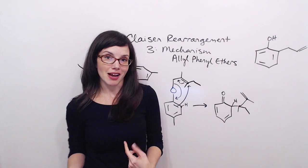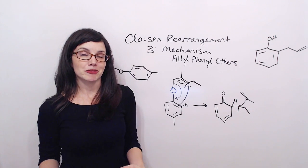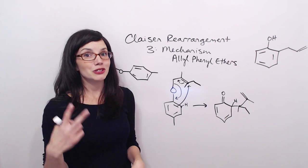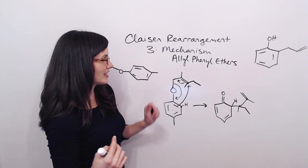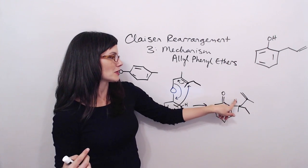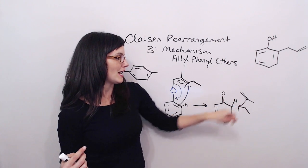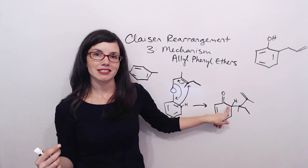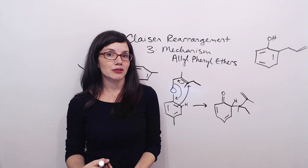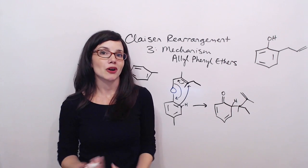So then our final step is to restore aromaticity. We need to show the two arrows, not three, that are going to restore our OH and the double bond. So let's see if you can draw the two arrows that are going to make that happen and then show our final product.